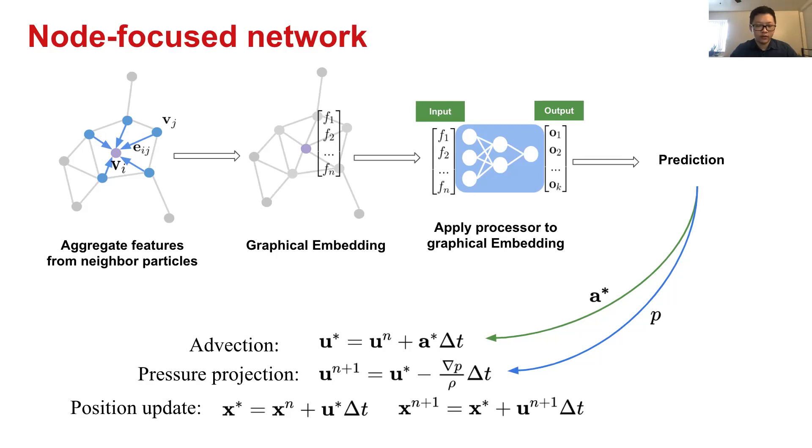At last, we got the output prediction we want. For advection net, this can be the acceleration. For pressure net, the prediction here is the pressure. Then we use this prediction to update the particle's states.